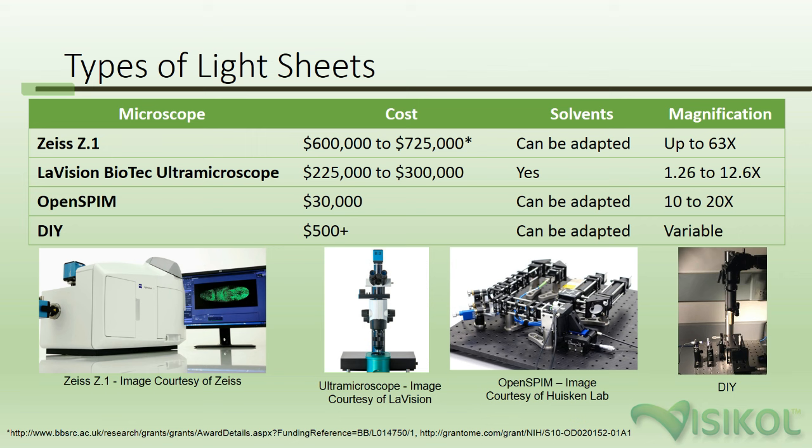The Ultra Microscope has a lens cover that allows it to be used directly with solvents, whereas the OpenSPIM device and Z1 require that the sample is placed in a special cuvette in the imaging container. This is important as some of the best clearing techniques are solvent-based.